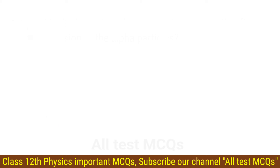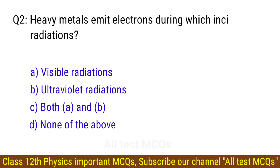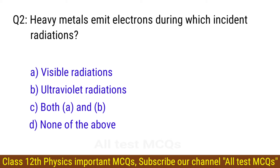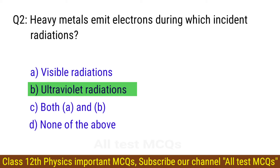Question number 2. Heavy metals emit electrons during which incident radiation? The right answer is option B: Ultraviolet radiations.